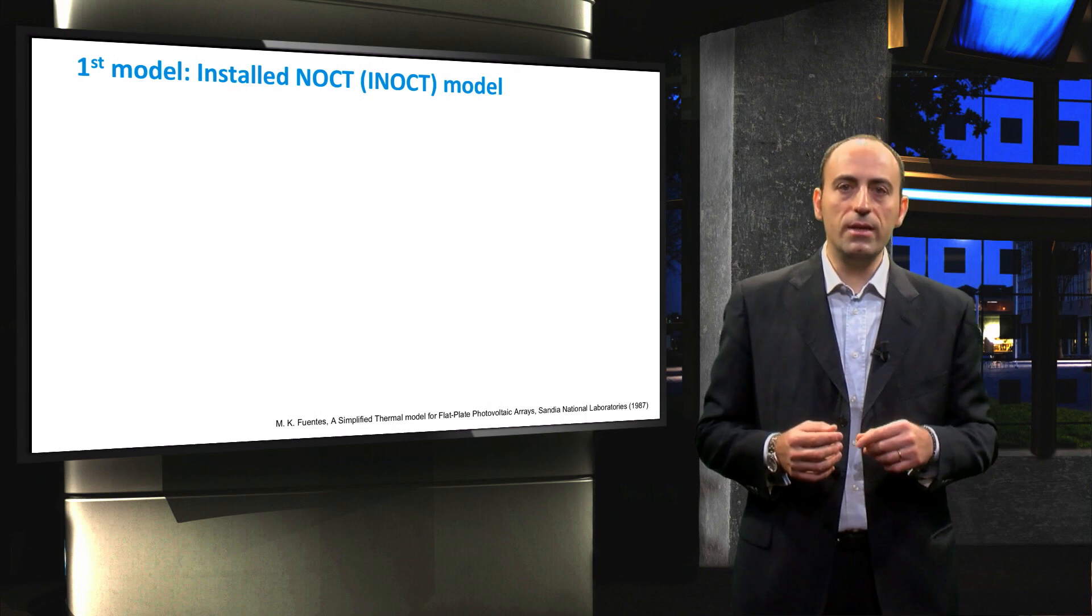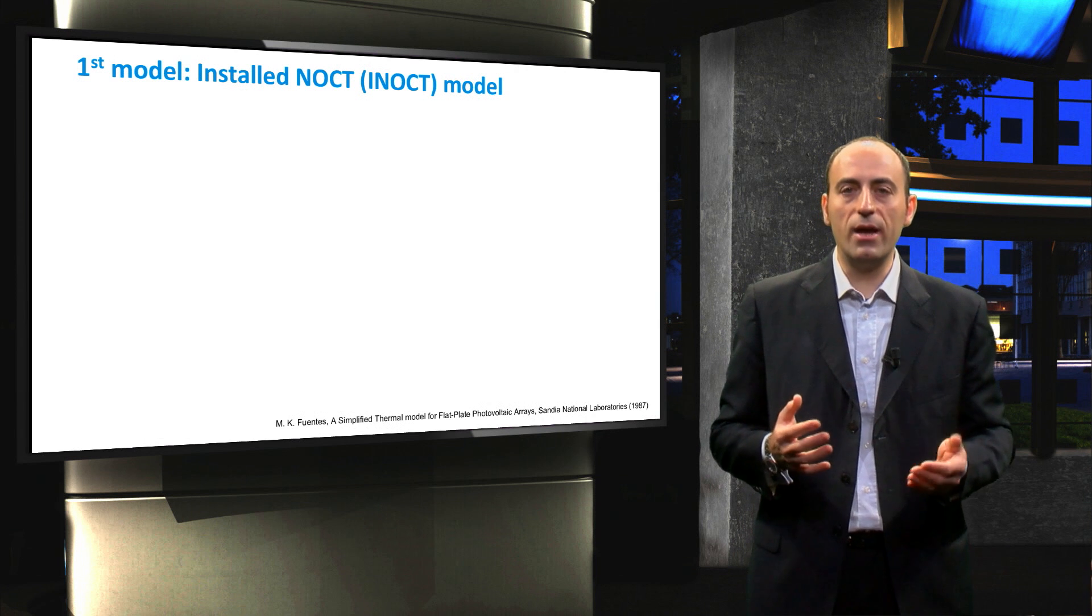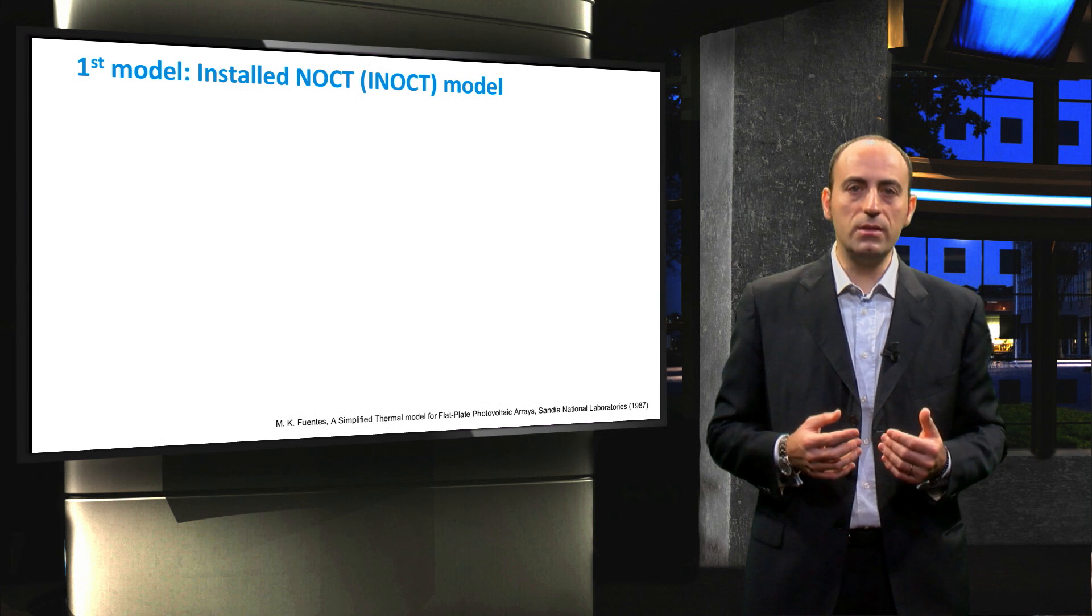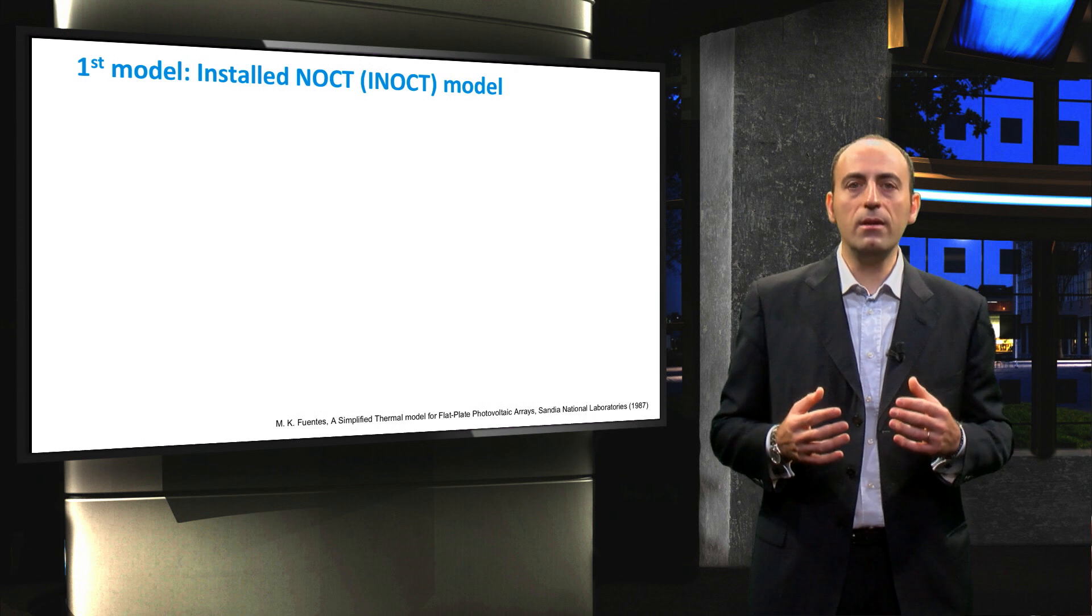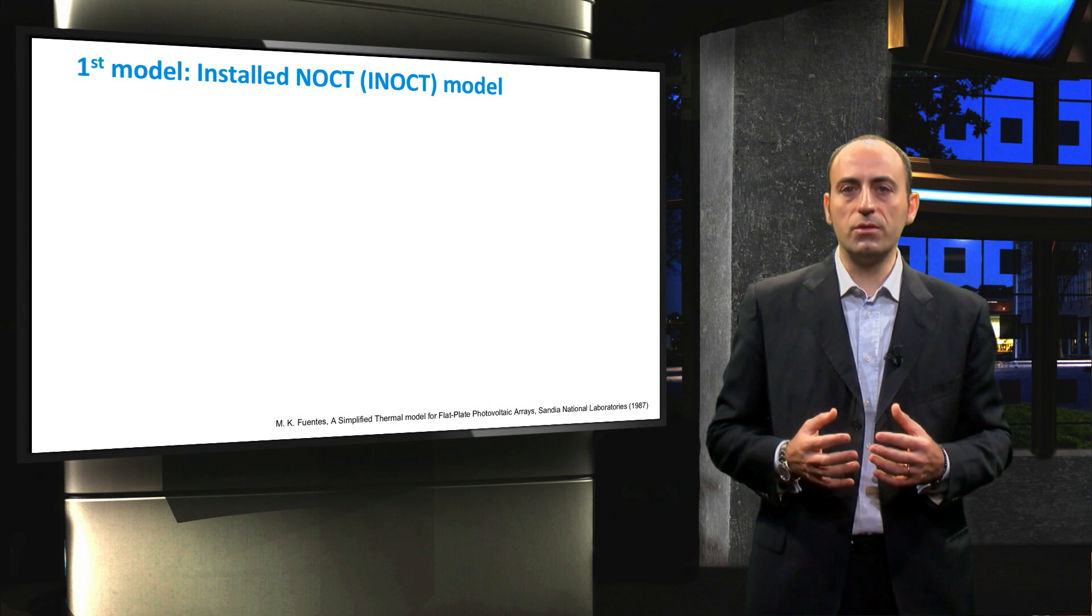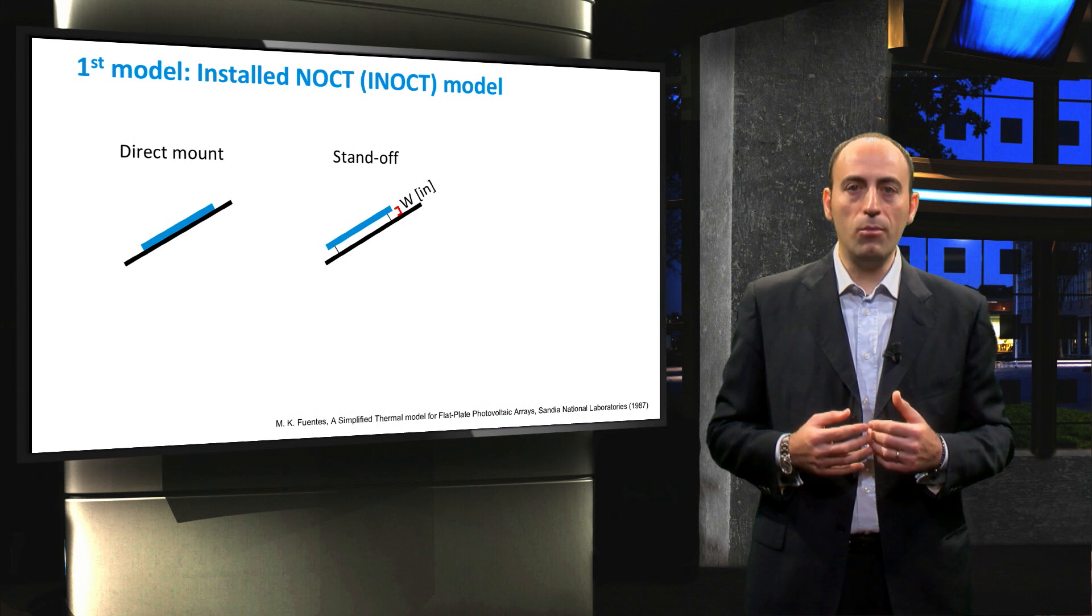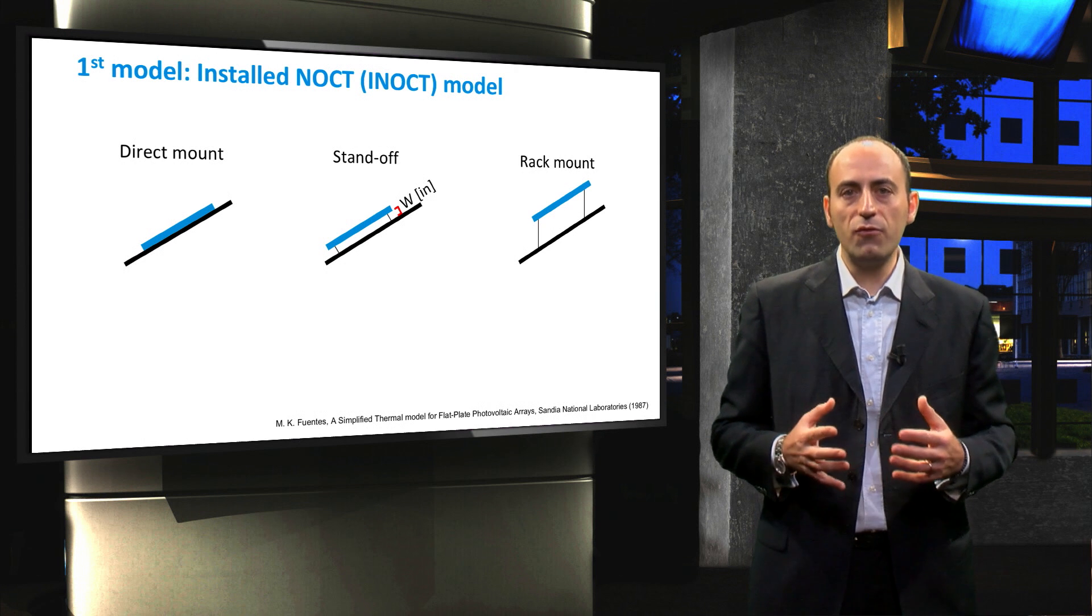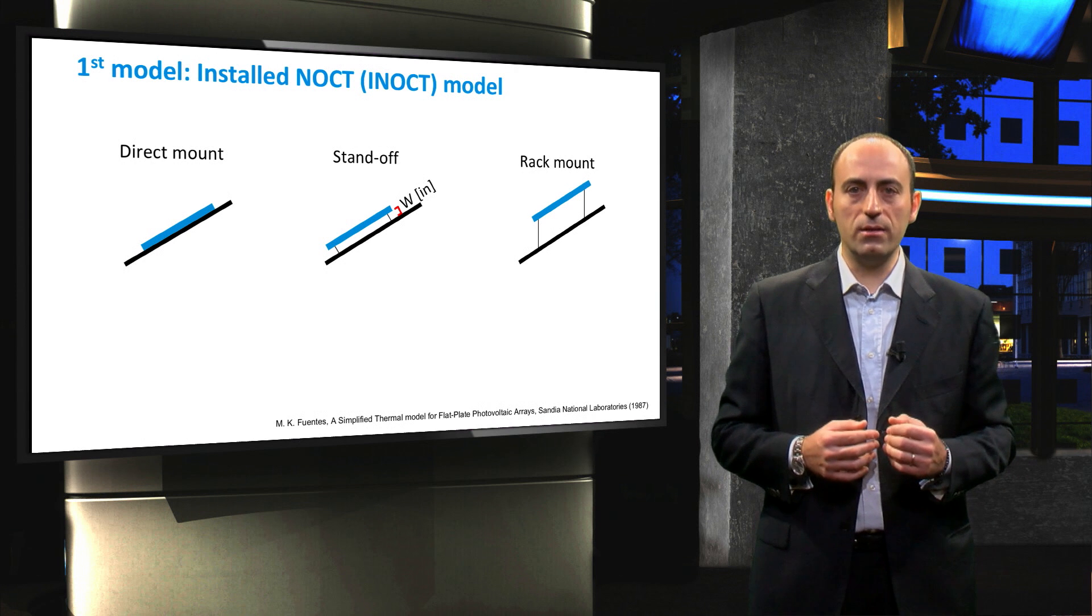The INOCT is described as the cell temperature of an installed array under NOCT conditions, and it depends on the different mounting systems and materials used for installation. Three main mounting configurations exist: direct mount, standoff with a distance W from the rooftop, and rack mounting. Basically, the differences lie in the distance between the module and the underlying structure.